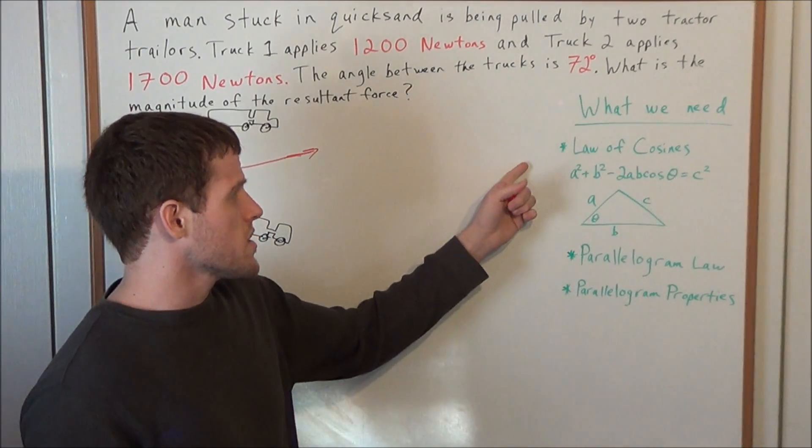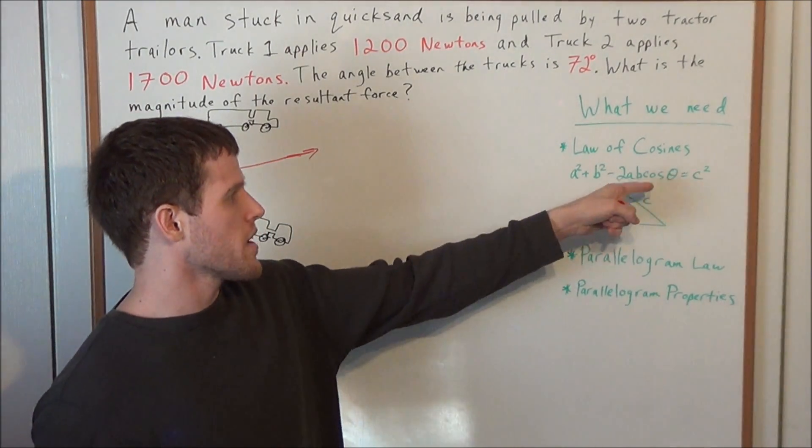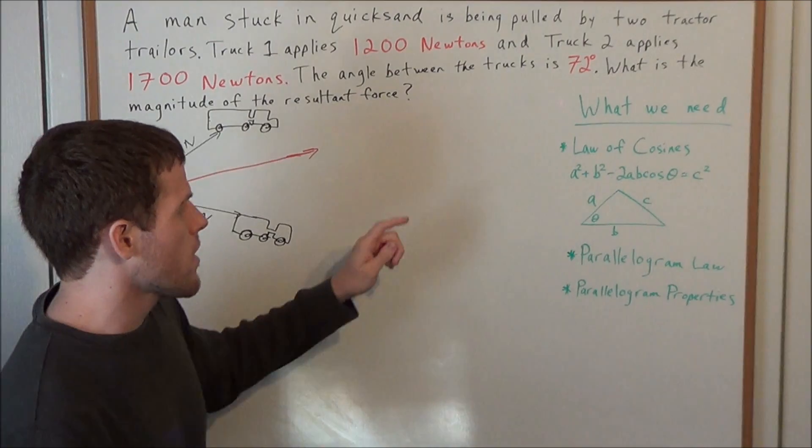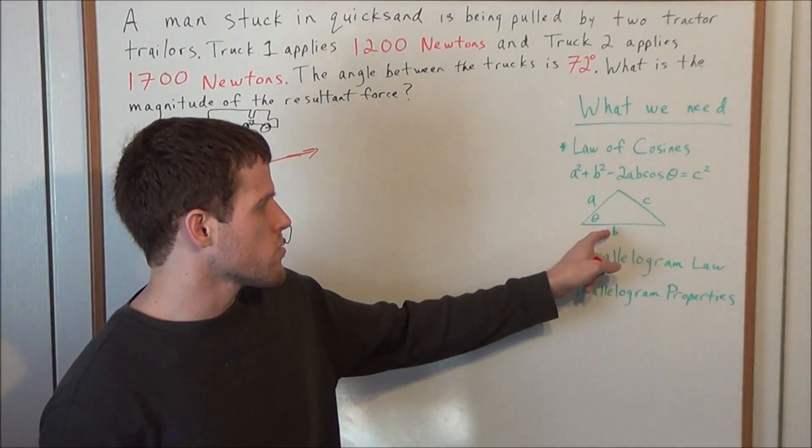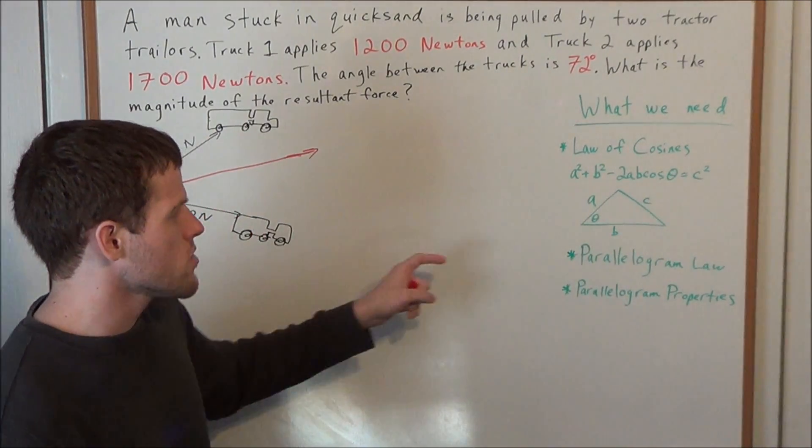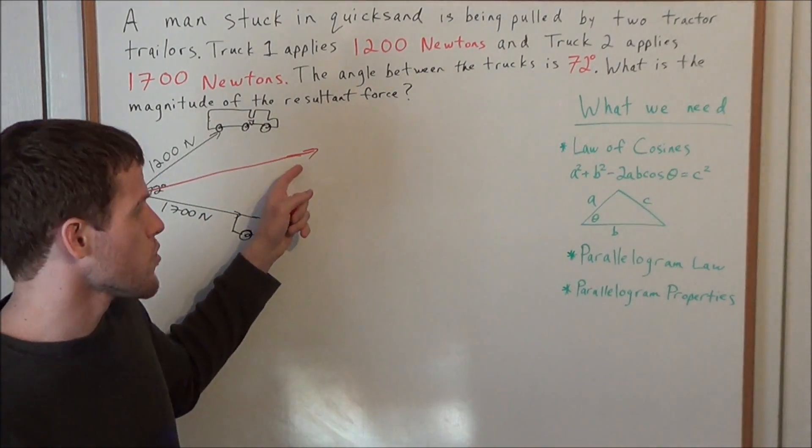The law of cosines states a squared plus b squared minus 2ab cosine theta equals c squared. So somehow we need to set up a side angle side relationship between some triangle to find the missing side c, or in this case the resultant force.